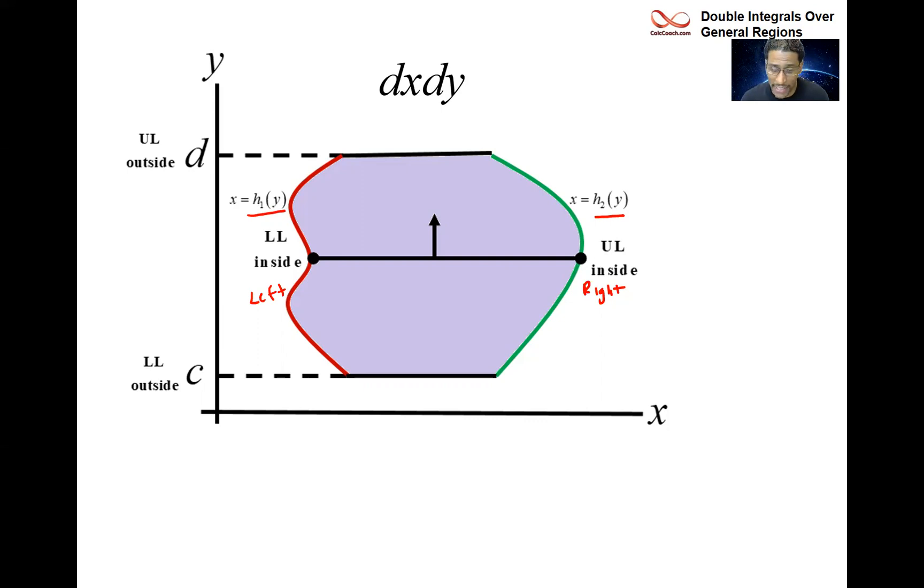When you make your slice, it's good to make circles at the end because they will be the places where you have your upper and lower limit inside. Then you move that slice vertically upward from a low point of some constant y equals c to a constant y equals d. Those become your upper and lower limit outside.